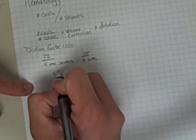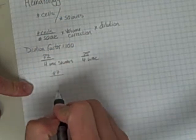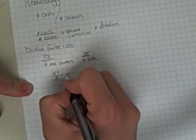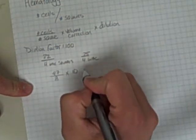So we could say this in other terms as 47 total white blood cells counted in eight total squares. The volume correction for a white blood cell square is 10.